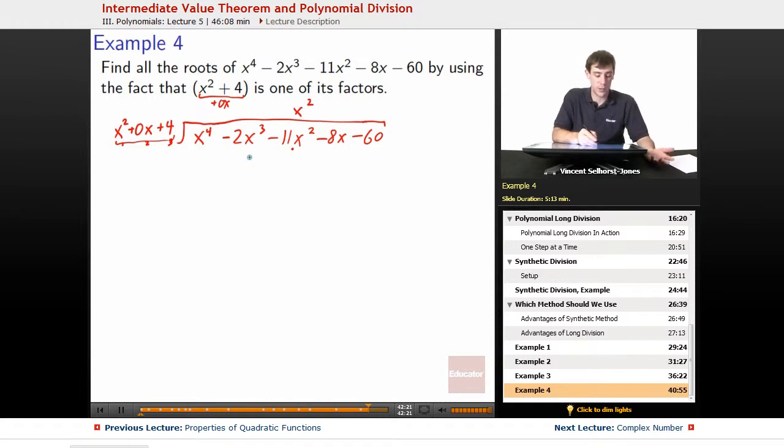So it'll be x squared here. So x squared times x squared plus 0x plus 4. So we get x to the fourth. This is just blank still, plus 4x squared.